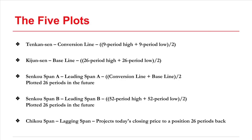And then there's the Kijun Sen, known as the baseline, which averages the 26-period high and the 26-period low.